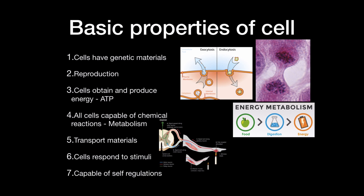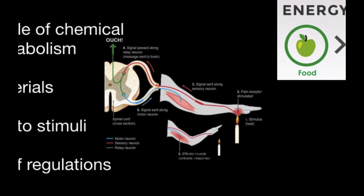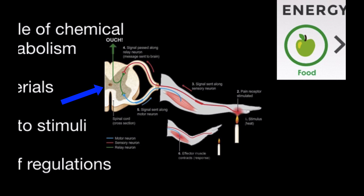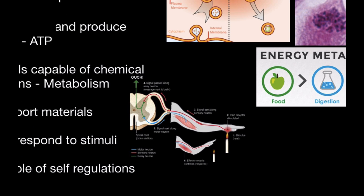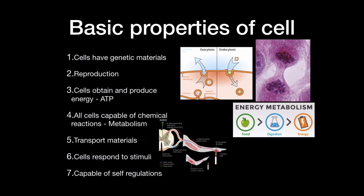Another function cells can do is respond to stimuli. If you ever hold your hand above a candle, pain receptors on cells are going to be stimulated. That's going to send a signal to the central nervous system — that's where you're going to feel the pain, which is why it takes a little time before you feel the heat. Then a signal is sent to your muscles to remove the arm. Another thing cells are capable of is self-regulation, and an example of that is apoptosis. If a cell notices something is wrong with it, it has the ability to kill itself so that it doesn't reproduce that mistake.